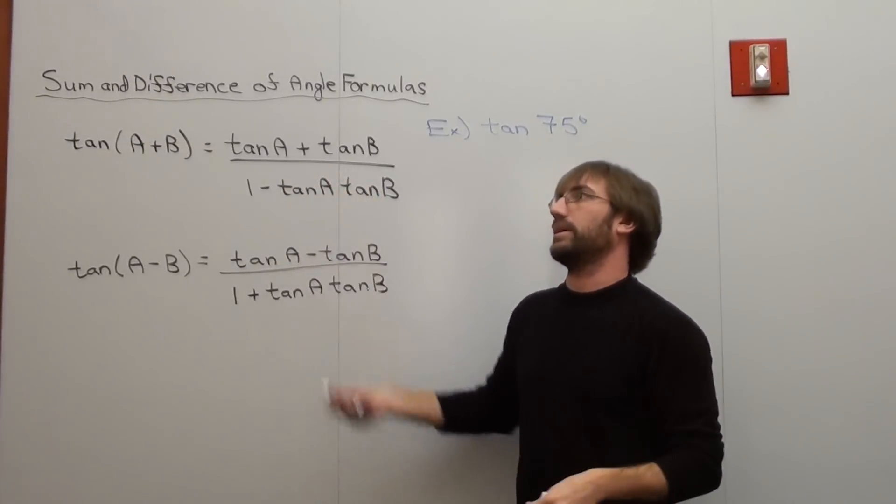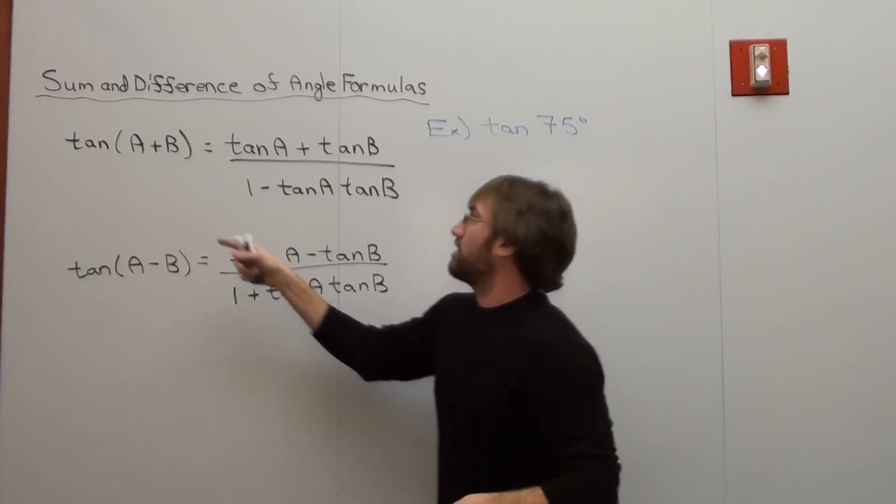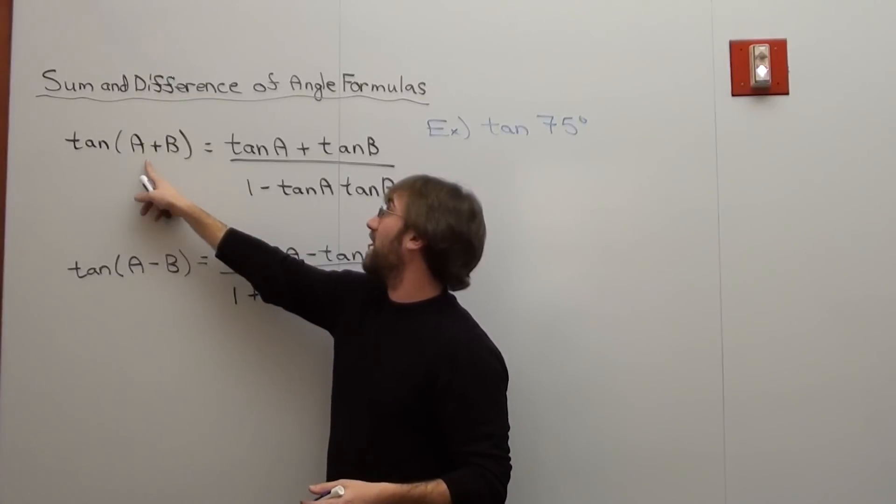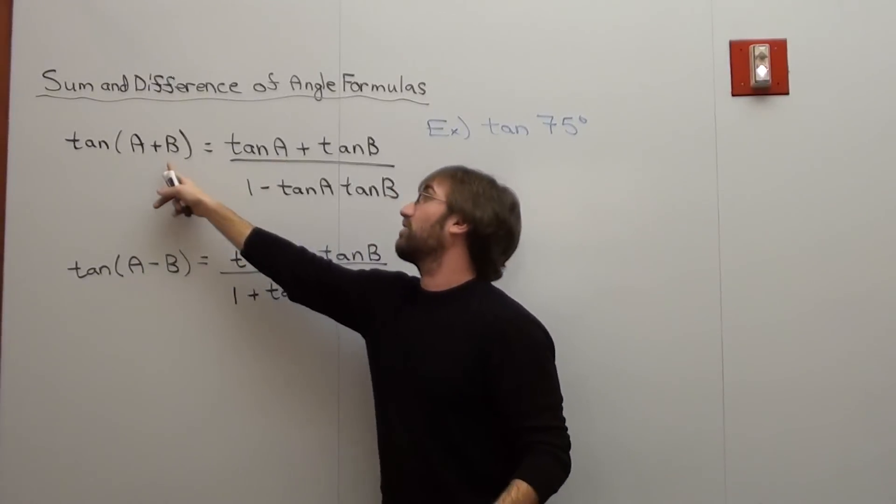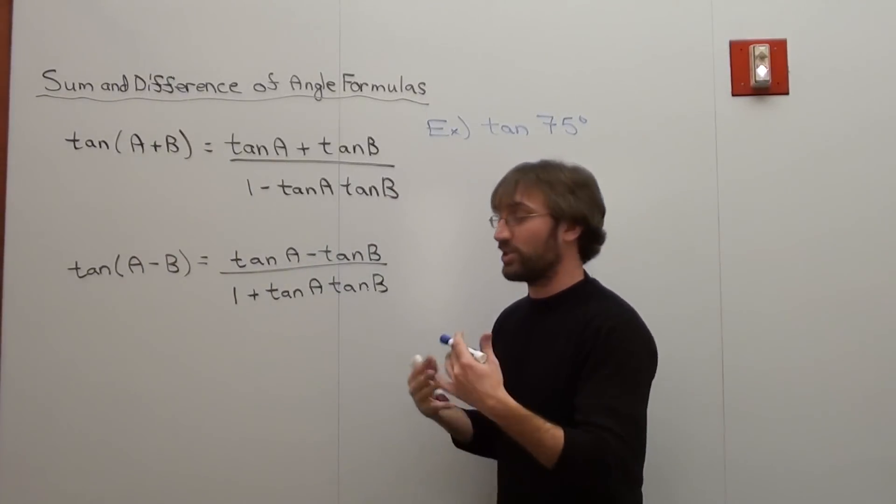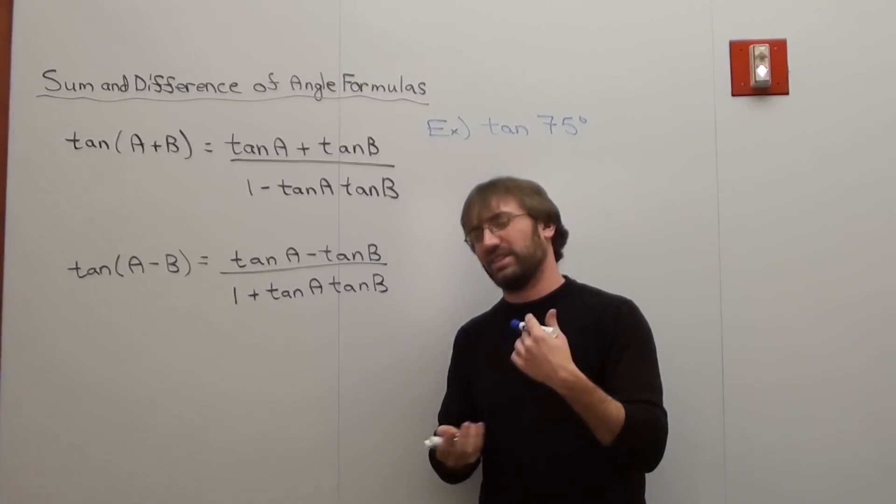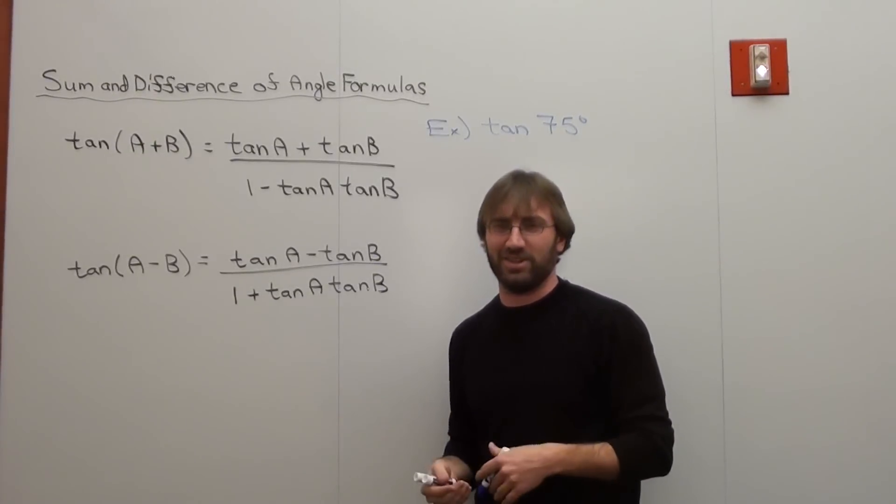You actually turn a tangent of 3θ into tangent of 2θ plus θ, and then every A that you see you put in as 2θ, and every B that you see is θ, and you can actually use it in identities. Really cool. I already showed that kind of example with the cosines. I'm not going to show it with the tangents.